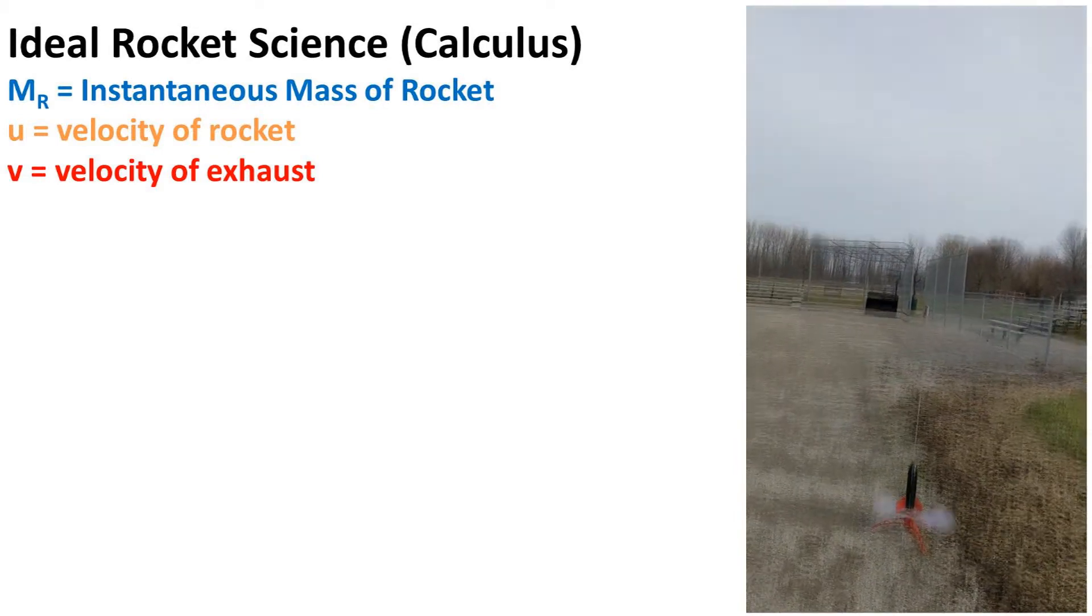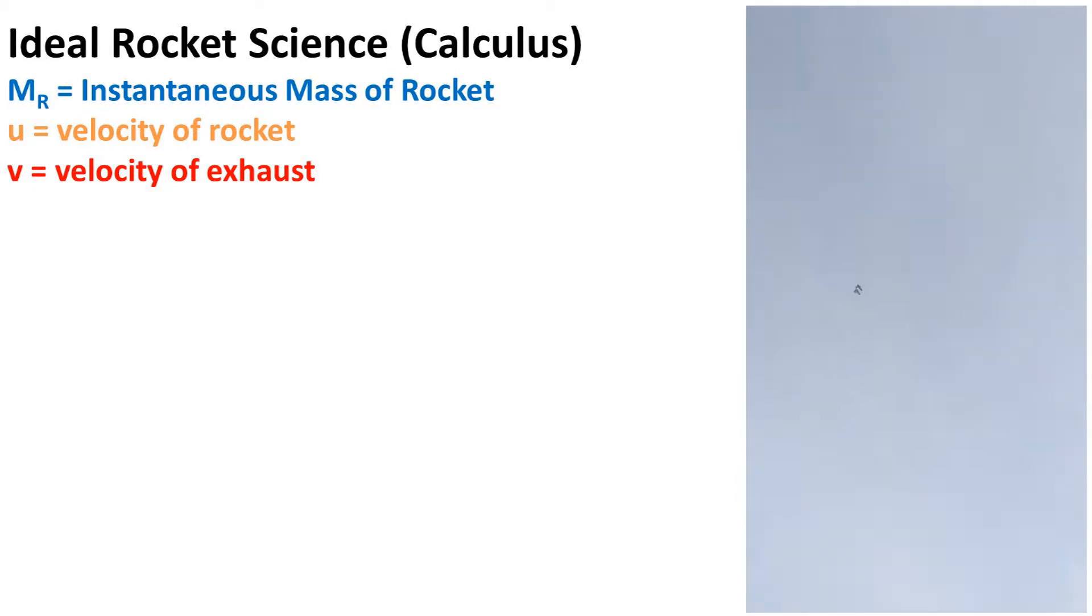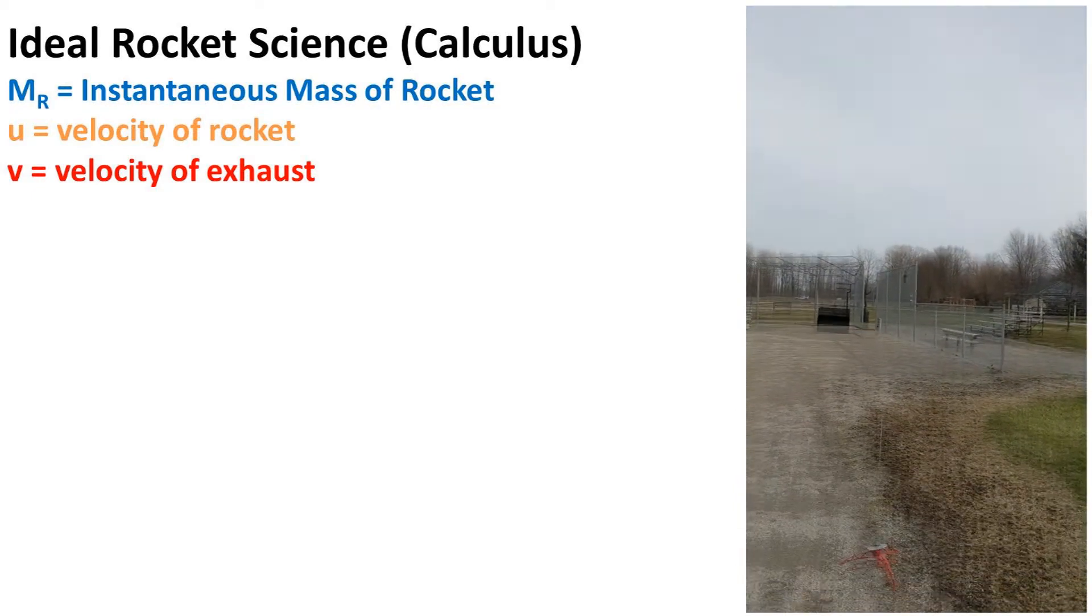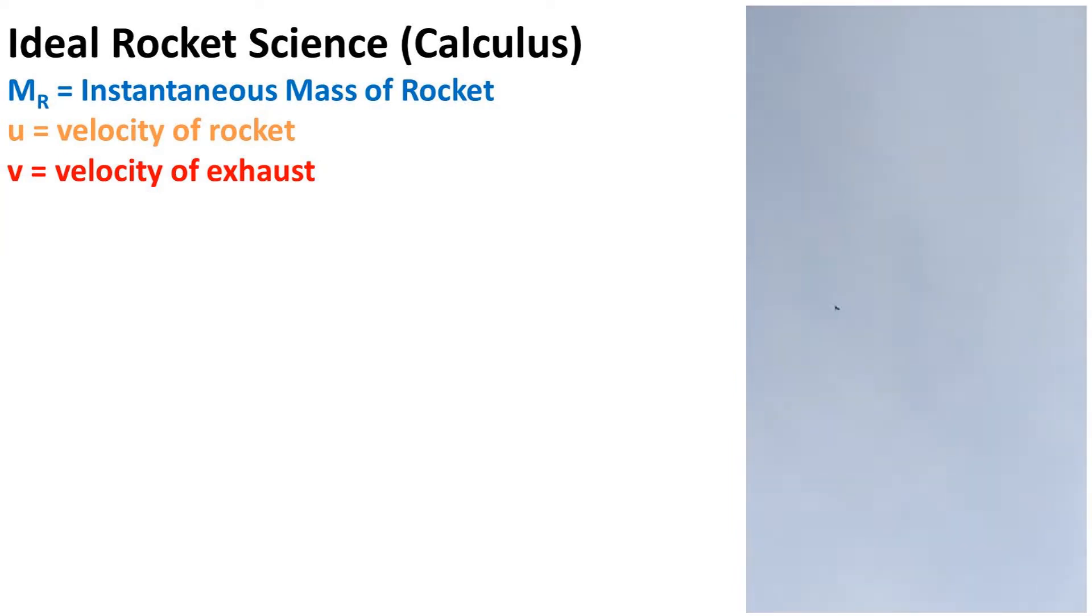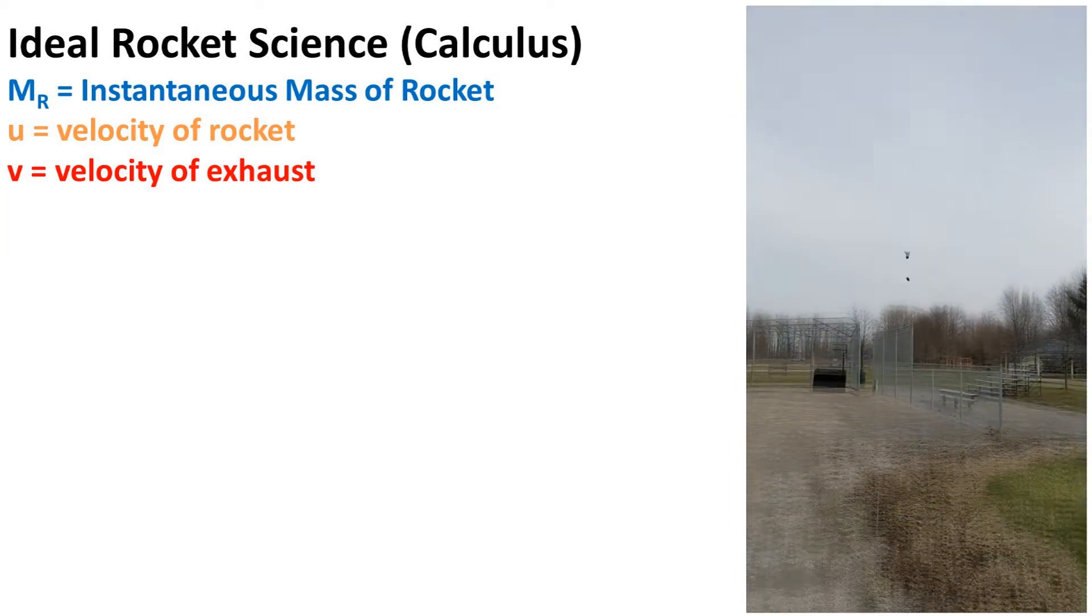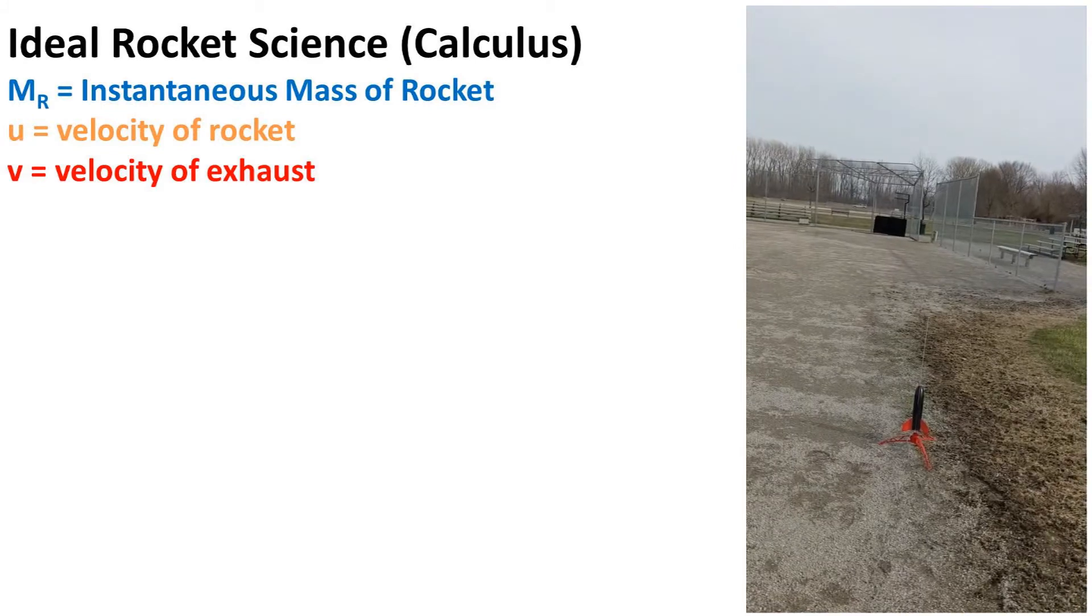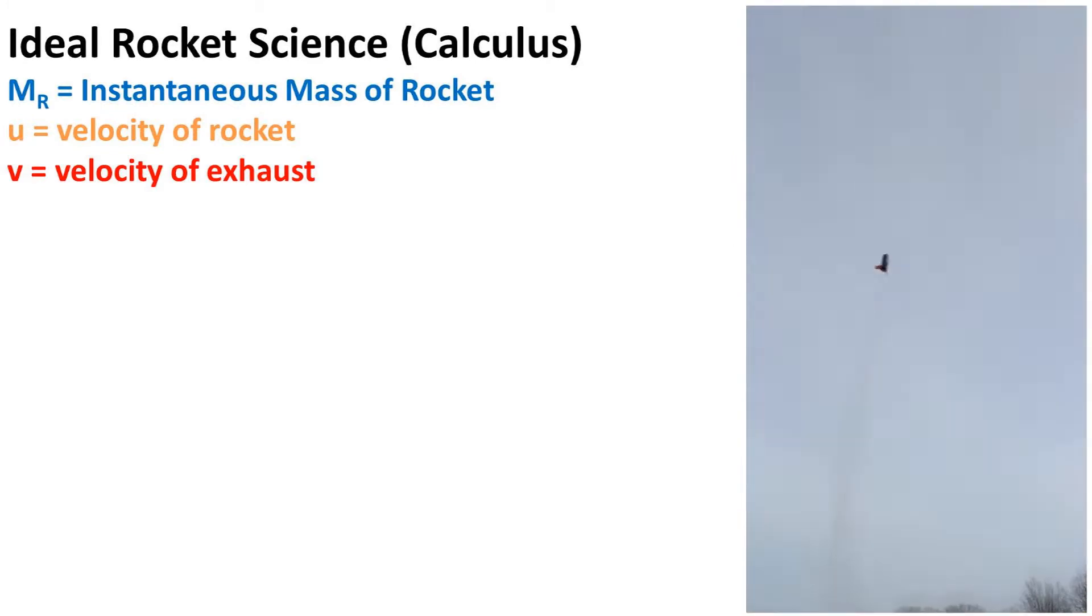The variables we'll be using are m subscript r, which is instantaneous mass of the rocket, or in other words, the mass of the rocket at a given point in time. u will represent the velocity of the rocket, and v will represent the velocity of the exhaust leaving the rocket.